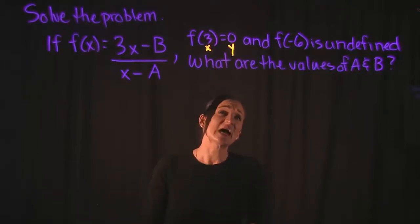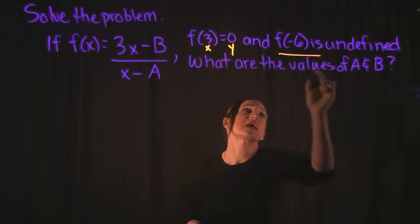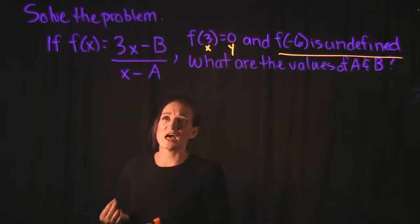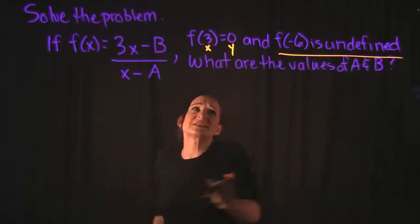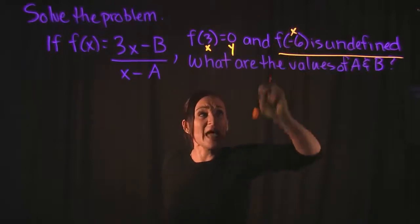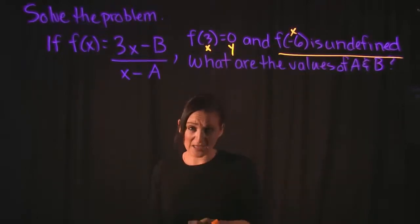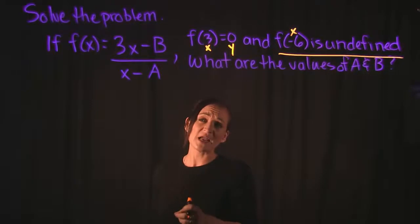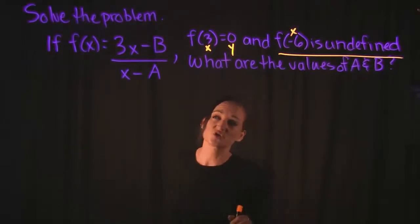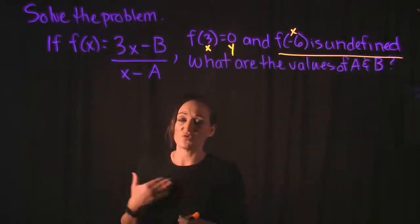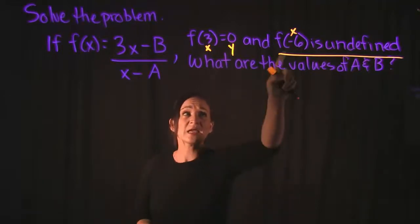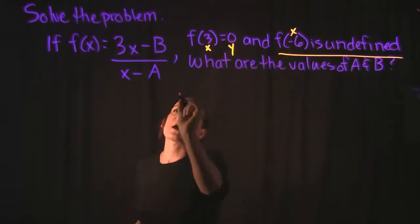So what this tells us, the fact that it tells us that f of negative 6 is undefined, that means that when we plug in negative 6 in for x, that means our denominator is going to equal 0. So that's exactly what I'm going to do first for this problem. I'm going to plug in negative 6 for x.